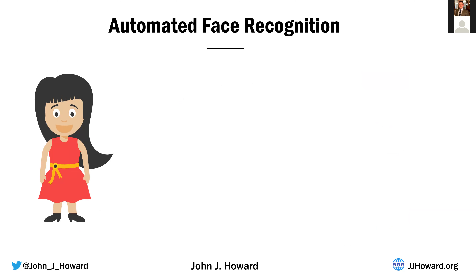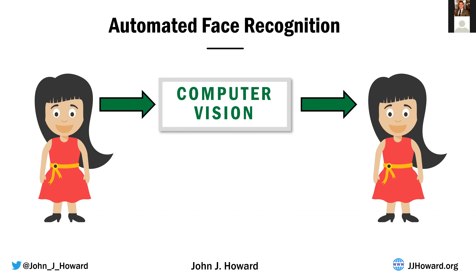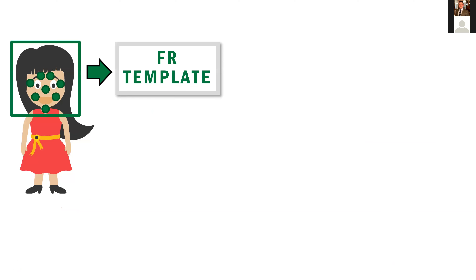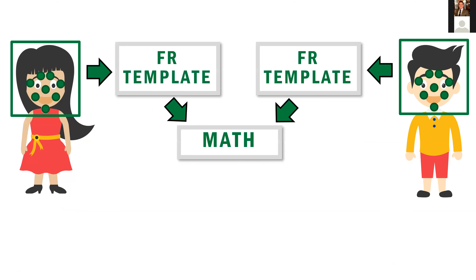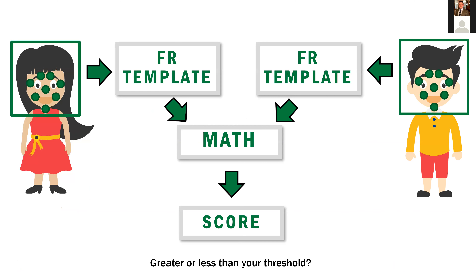Face recognition works something like this. We start off with a picture of a human and use something called computer vision to first isolate the area around the human's face, and second, find all the points associated with features of the face — things like the corners of the mouth, where the nose is, where the eyes are, where the cheeks are. All these points get saved into something called a face recognition template — basically what the math thinks your face looks like. We then get another template from either the same person or a different person and use more math to compare the two templates and get a score. That score tells you how similar the program thinks those two images are, and you then decide if the score is high enough to call it a match or too low, meaning the two people are actually different.